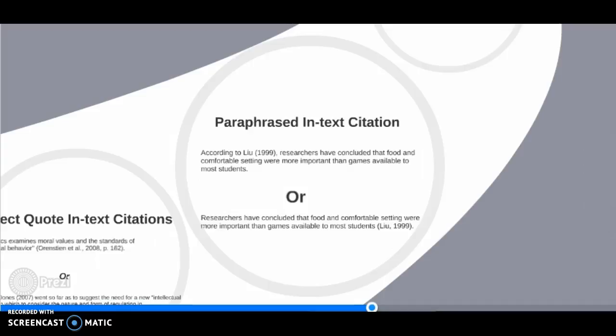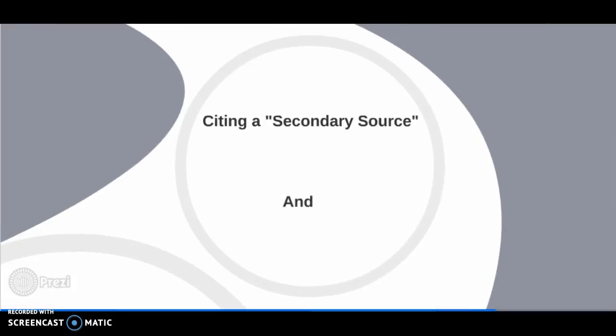The third in-text citation that we'll be covering is called citing a secondary source. As we have covered in this course, the best sources are peer-reviewed. This means they have been reviewed and deemed accurate, credible, reliable, and objective by authorities on the topic that the resource is exploring.